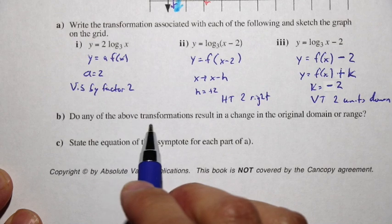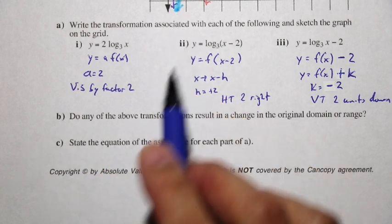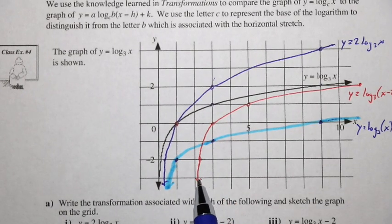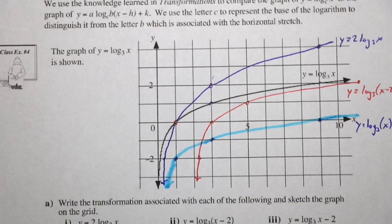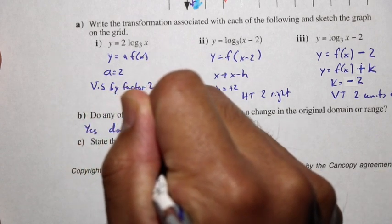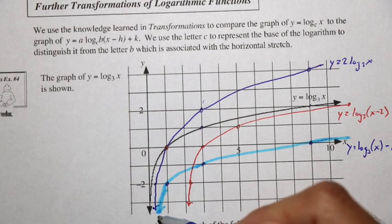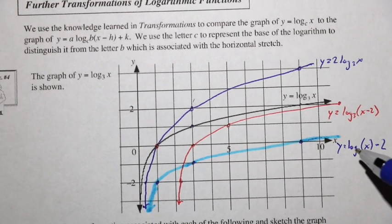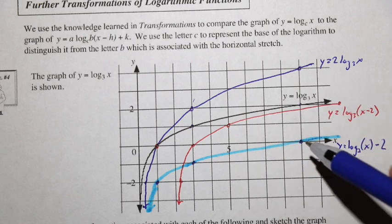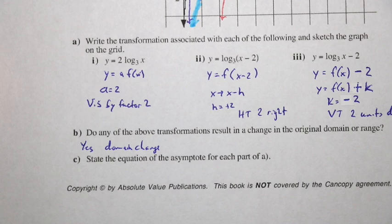Let's answer question B: do any of the transformations result in a change in the original domain or range? Looking at the red graph (horizontal shift), it only has x values greater than 2, which is different from the original where x is greater than 0. So yes, there is a domain change. For the range — since the arrows continue both downward and upward, all y values remain possible even when shifted down 2 units, so there is no change to the range.